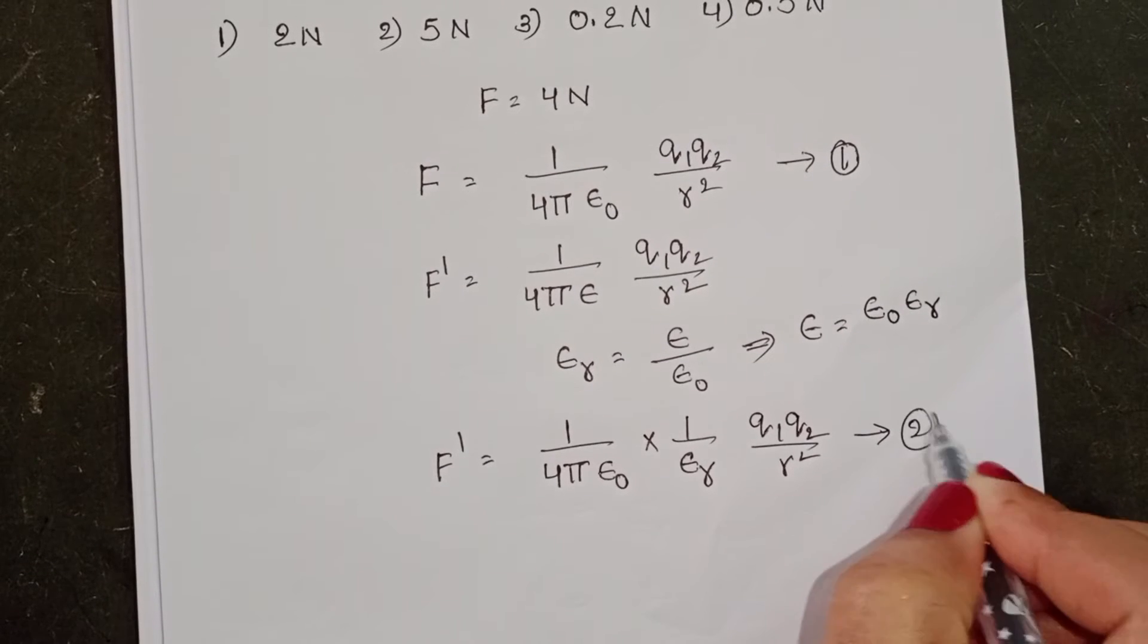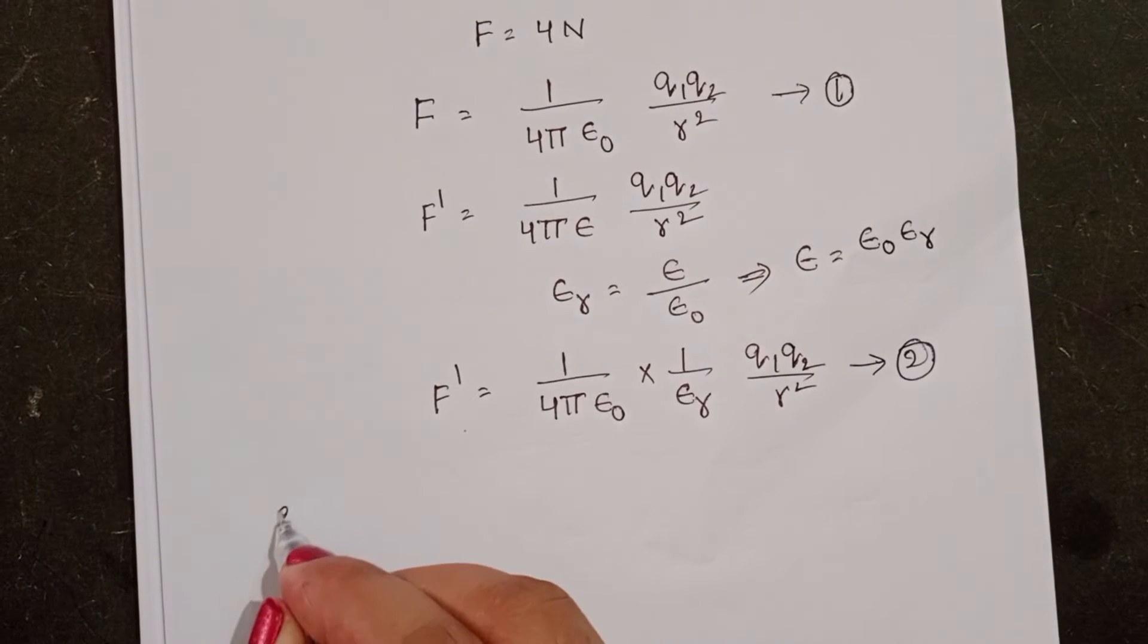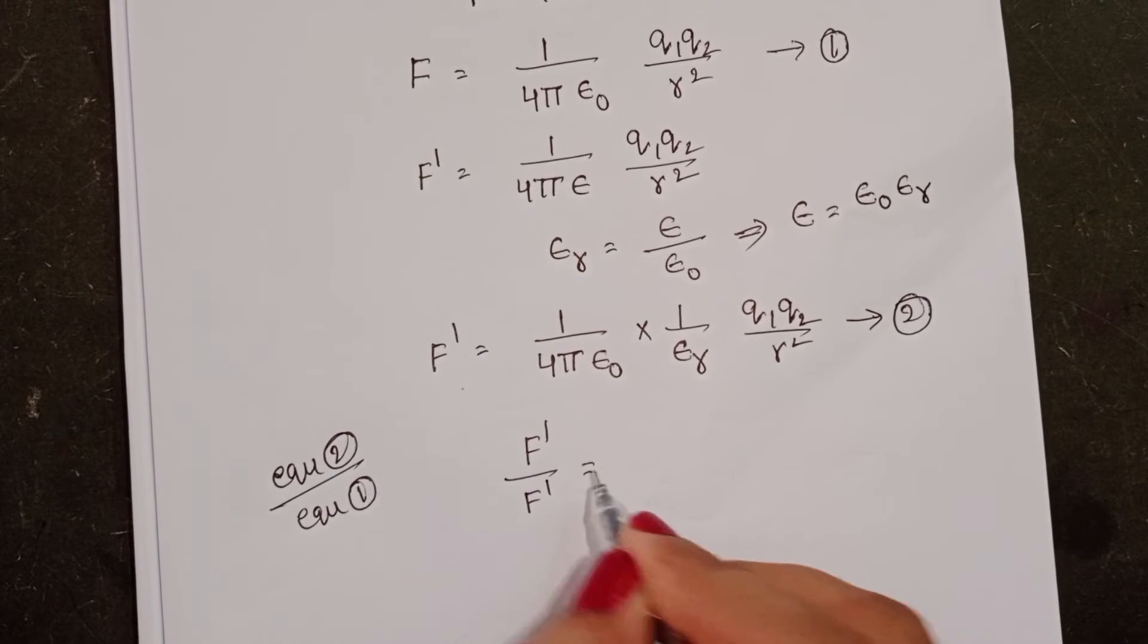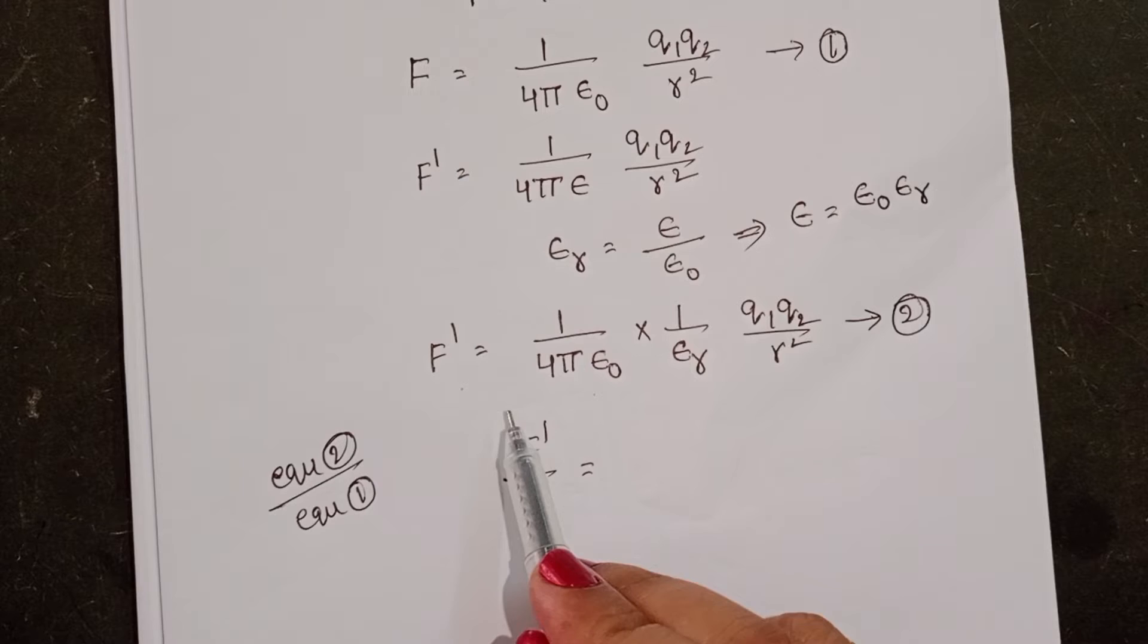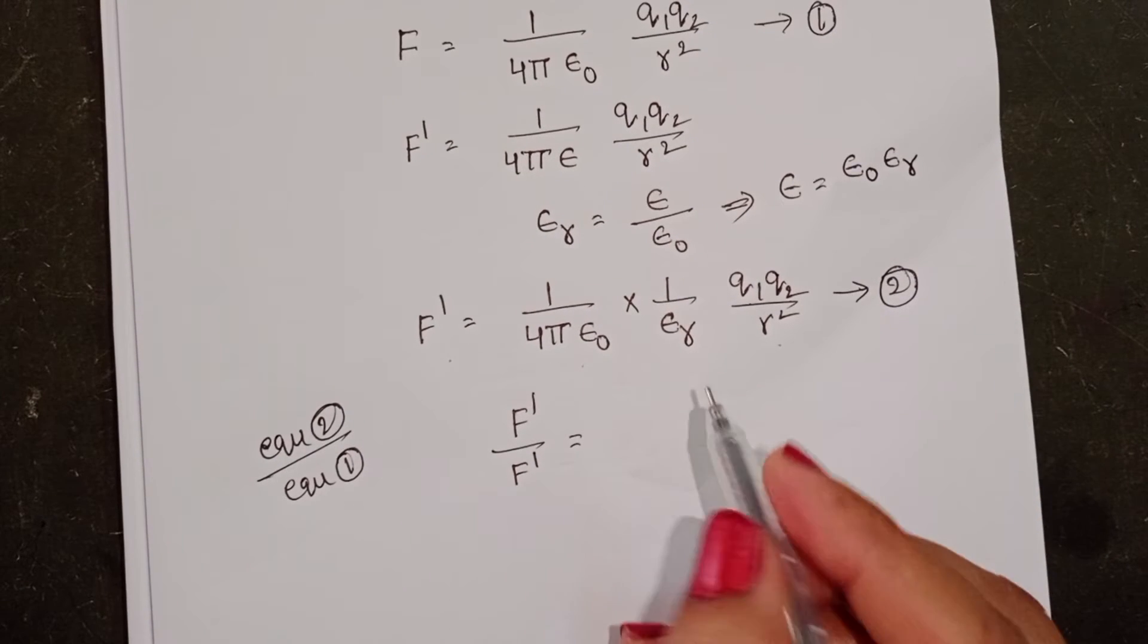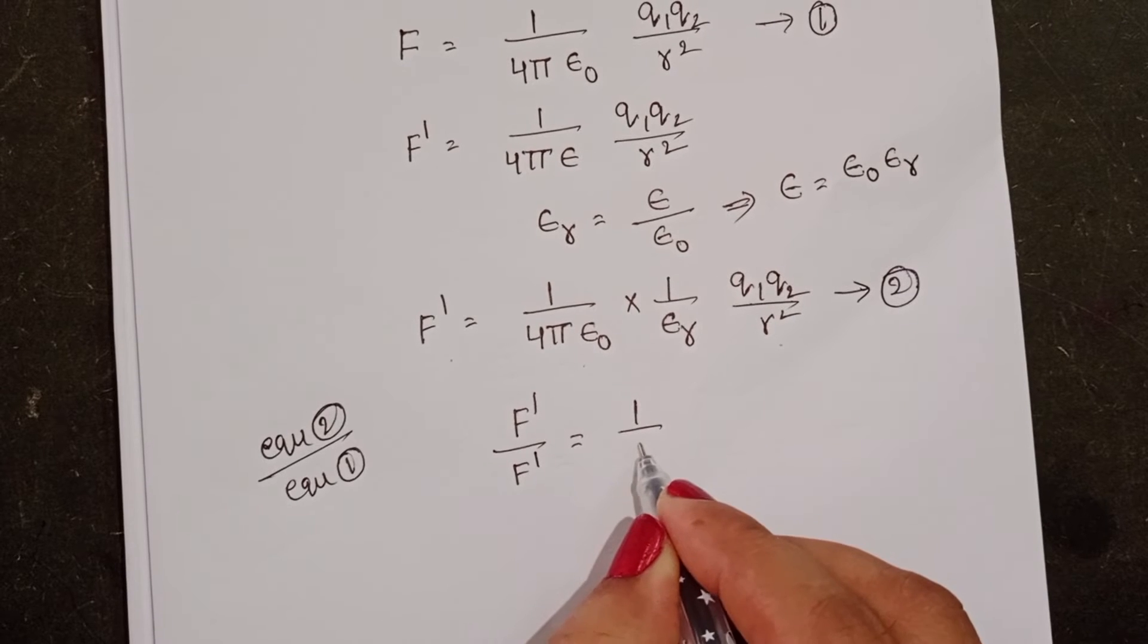Take this as equation 2. Take equation 2 by equation 1. F dash by f is equals to: Here 1 by 4 pi epsilon 0 gets cancelled, q1, q2 by r square also gets cancelled. Then it becomes 1 by epsilon r.